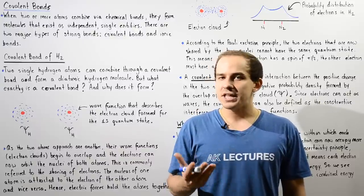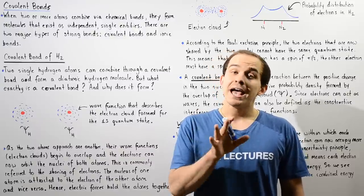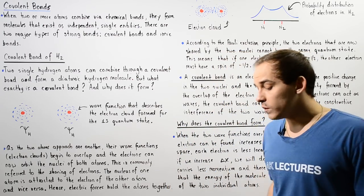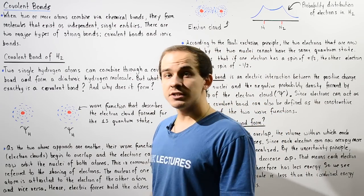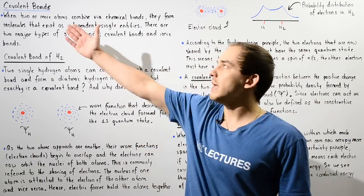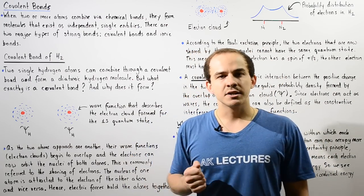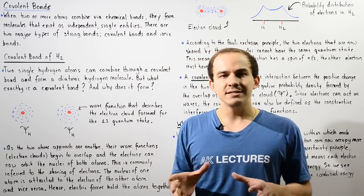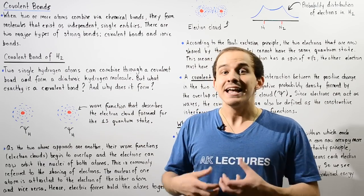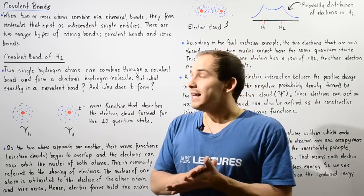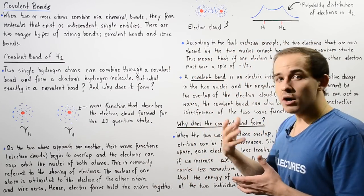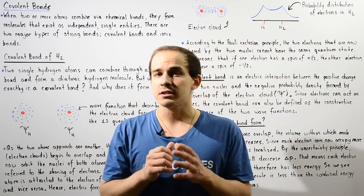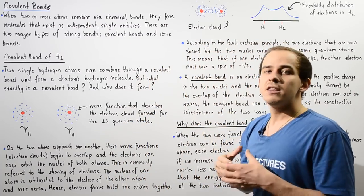Our entire modern-day understanding of what a chemical bond is and how a chemical bond is actually formed comes from quantum mechanics. In this lecture we're going to take the quantum mechanical approach to studying and understanding what a covalent bond is. The two major types of strong bonds in chemistry and physics are the covalent bond and the ionic bond, and in this lecture we're going to focus specifically on the covalent bond.